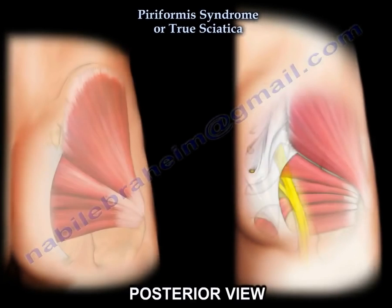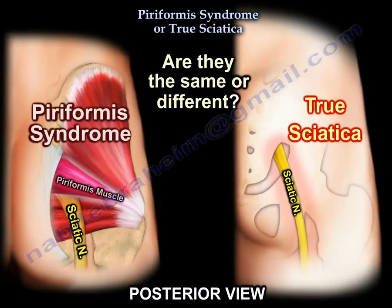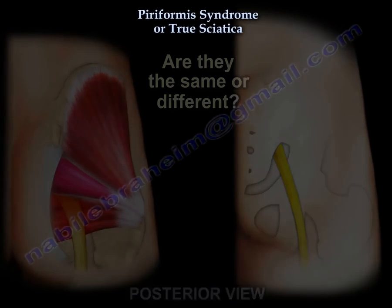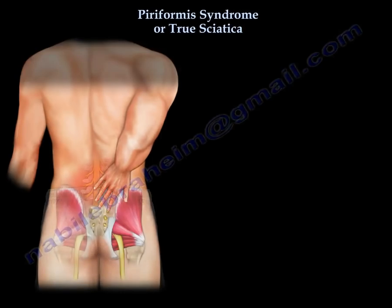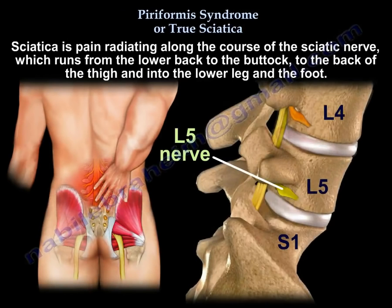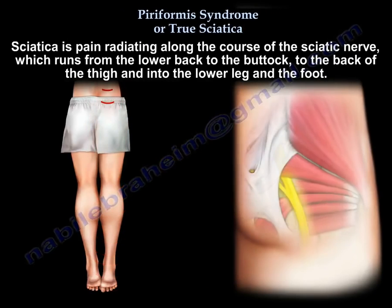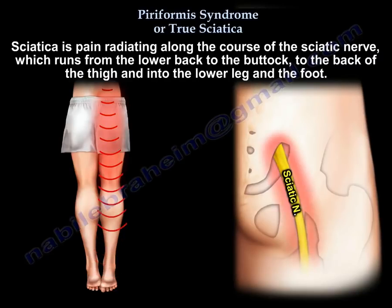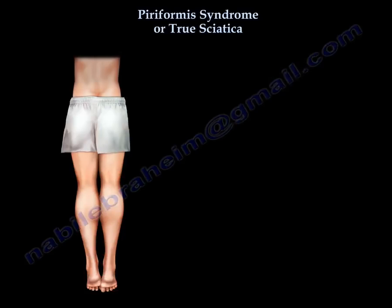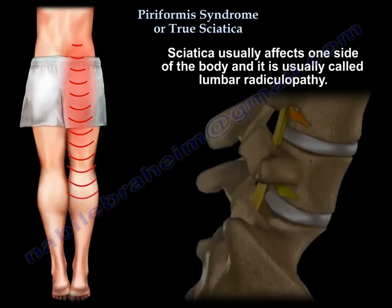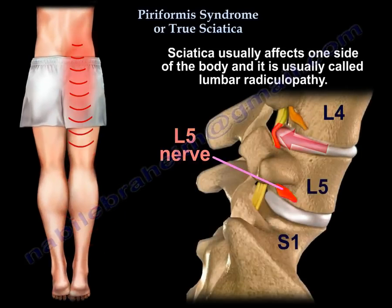Piriformis syndrome or true sciatica — are they the same or different? Sciatica means pain radiating along the course of the sciatic nerve, which runs from the lower back to the buttock, the back of the thigh, and into the lower leg and foot. It usually affects one side of the body and is usually called lumbar radiculopathy.